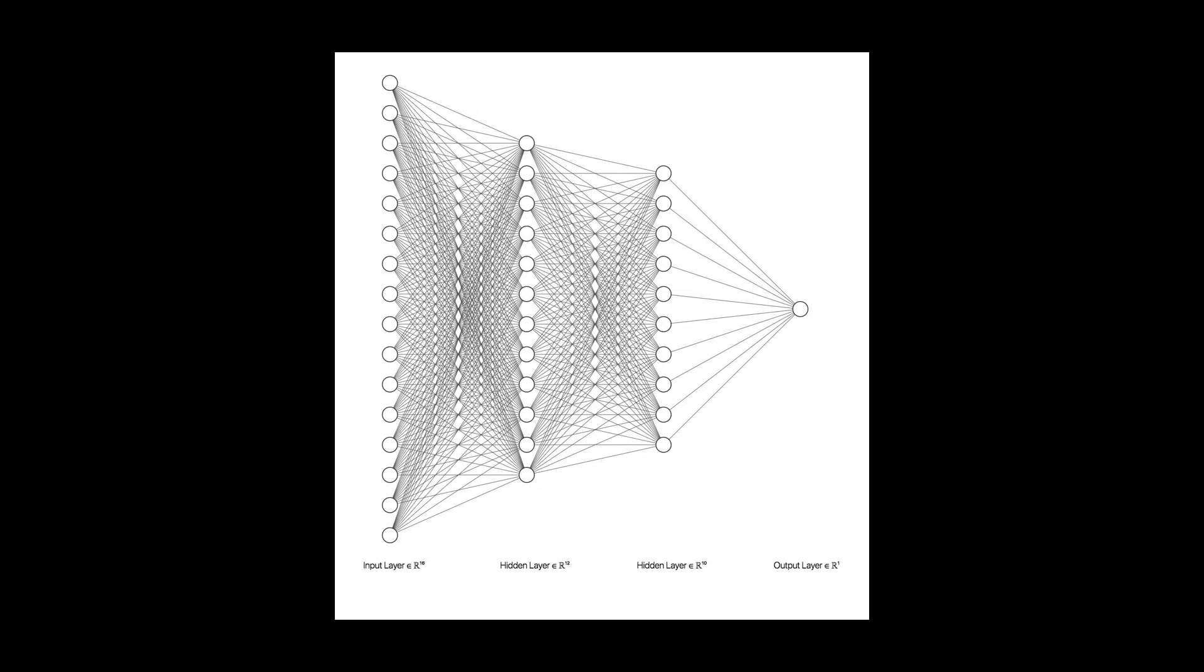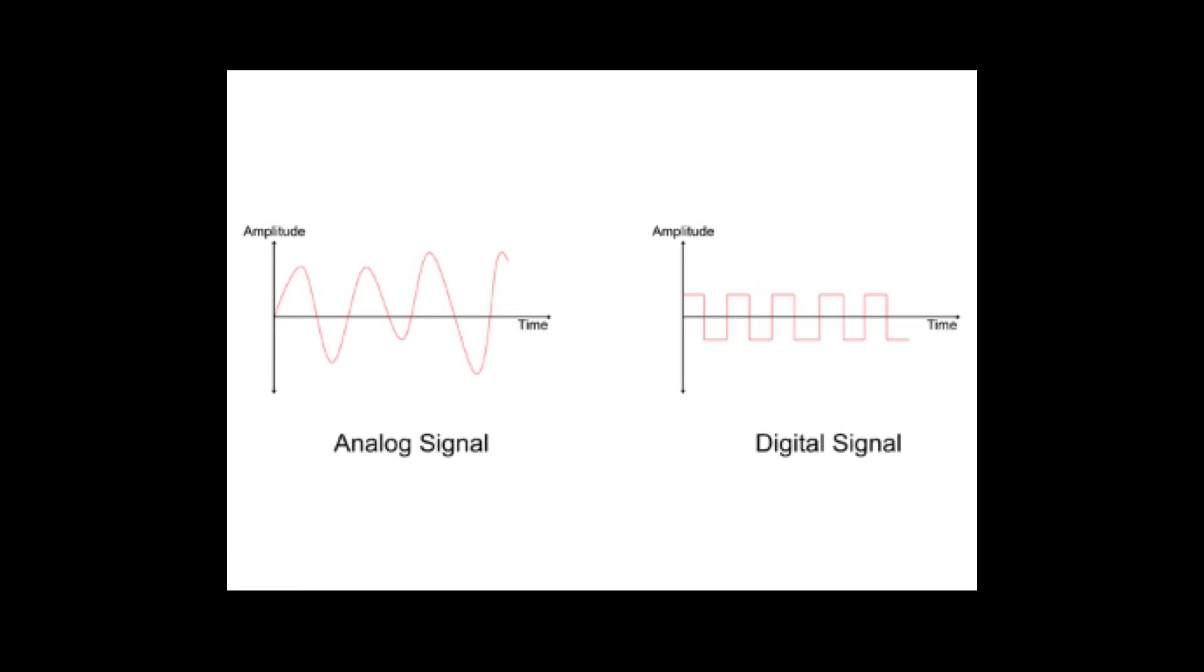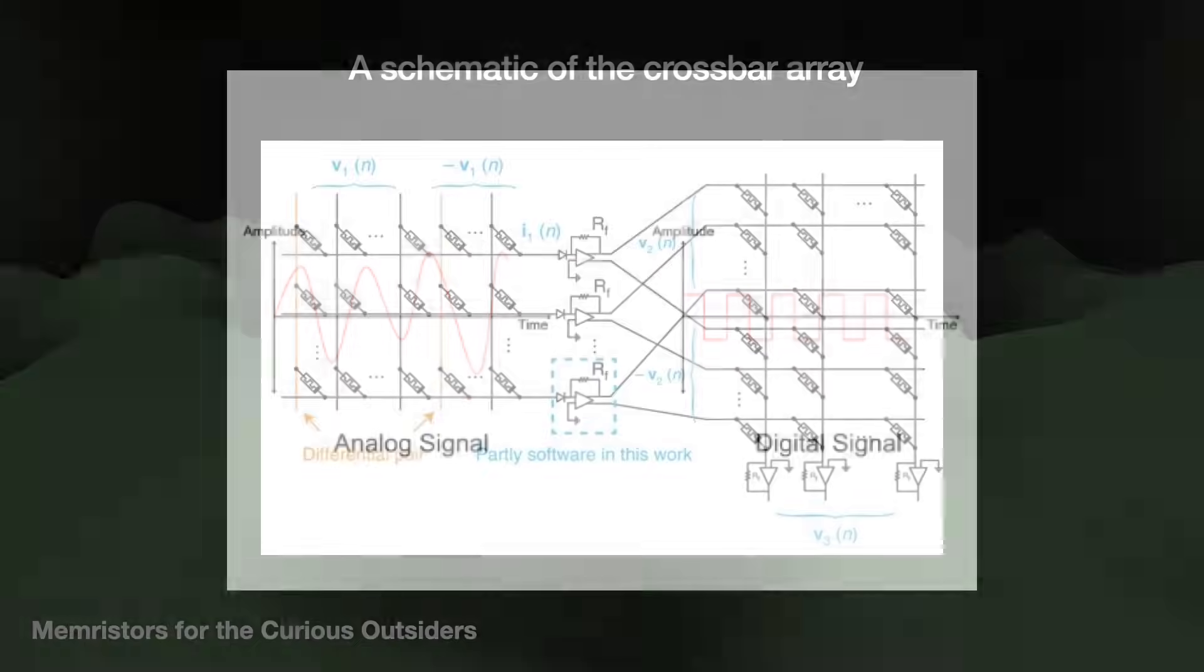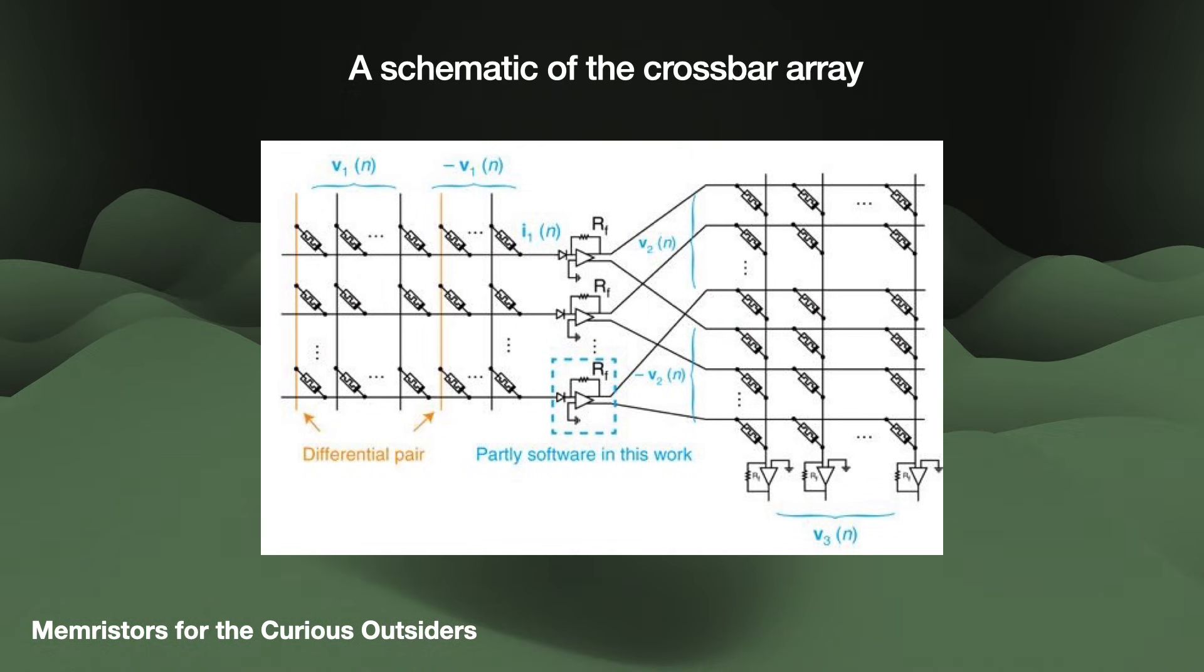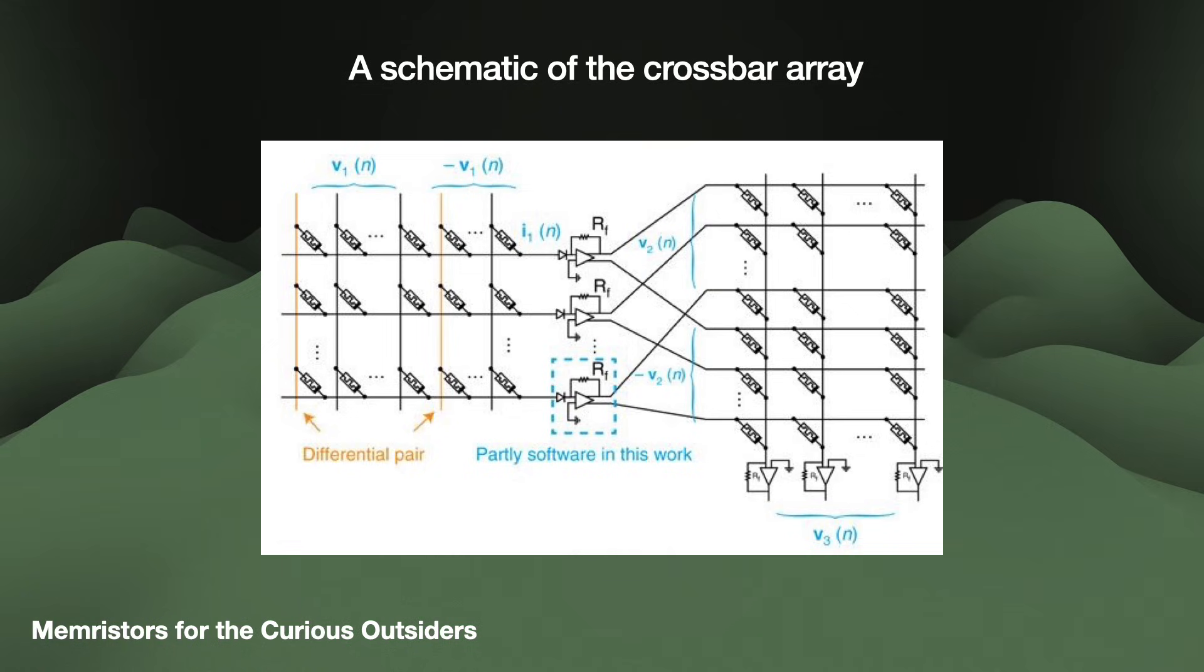A memristor crossbar can perform these using what is called analog computations. Analog is a different paradigm than digital. It involves continuous values modeled on the real world, rather than the abrupt ones and zeros from the digital world. The memristor crossbar lets us use fundamental laws in electrical engineering to do multiplication and summation across a whole row of memristors.